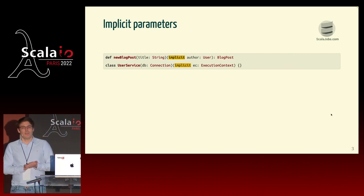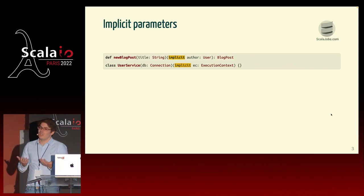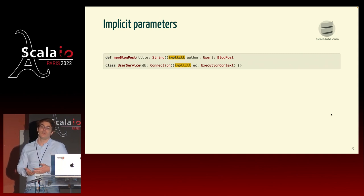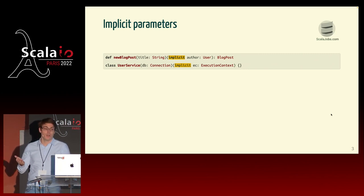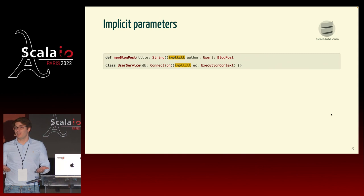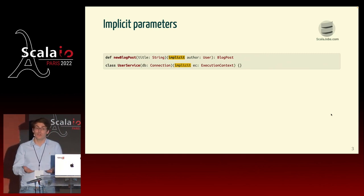At least if you come from another mainstream programming language like Java, Python, or Ruby, they don't really have implicit. So we don't really have design patterns to know how to use these features, and there are not really books on how to use implicit in Scala — maybe you will find a blog post, but there is a lack of resources around this.